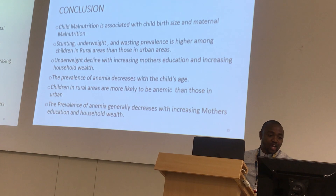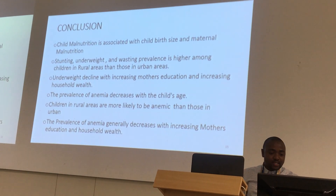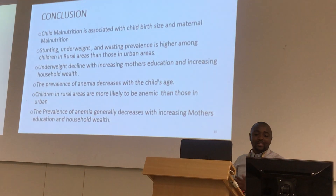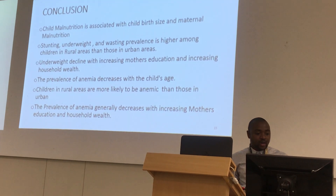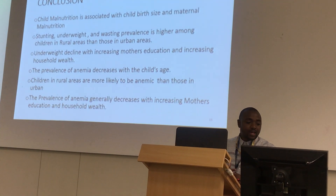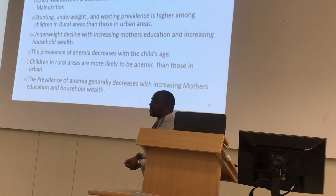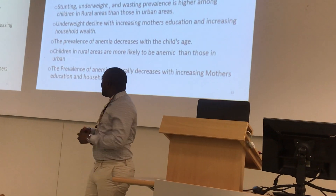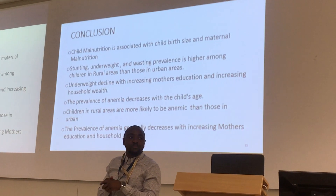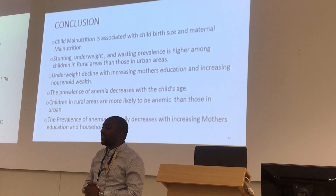In conclusion: child malnutrition is associated with child bed size and maternal malnutrition. Stunting, underweight, and wasting prevalence is higher among children in rural areas than urban areas. Underweight declines with increased mother's education and household wealth. The prevalence of anemia decreases with the child's age, and children in rural areas are more likely to be anemic. Anemia prevalence also decreases with increased mother's education and household wealth, and since anemia contributes to a child's body mass index, these findings are significant. It is a great pleasure to present at the SASA conference. Thank you.